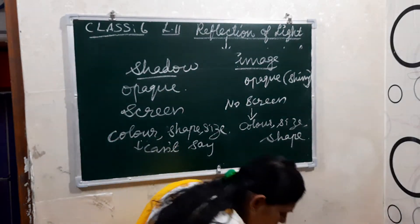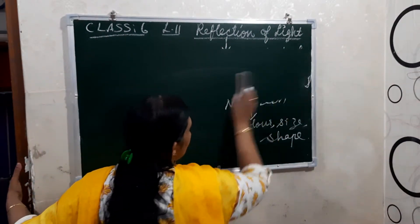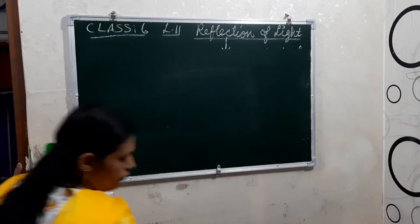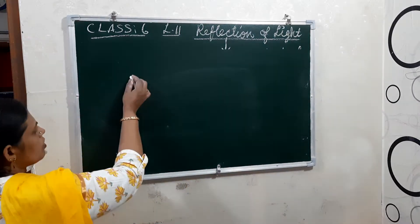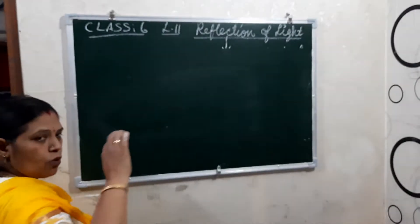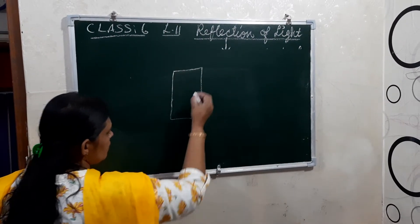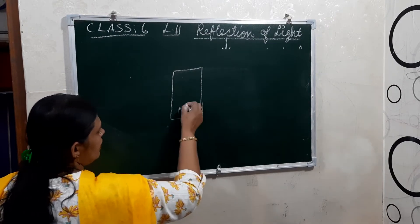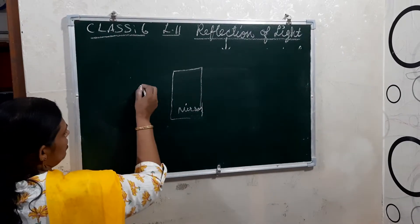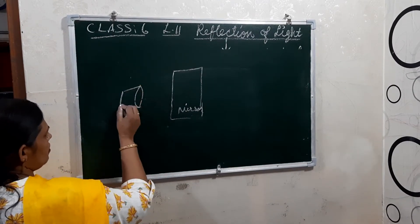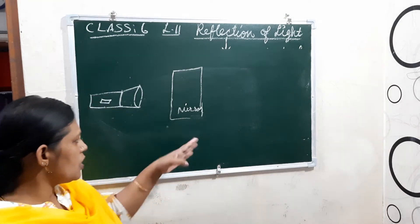Now let's see how light changes its path. There is a small activity for this. You have to do this activity in a dark room. Go to the dark room, keep one mirror there, and take a torch light. Then just close the door.